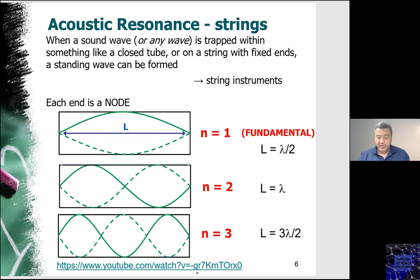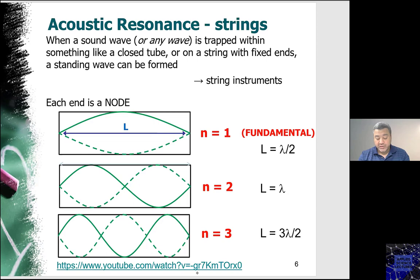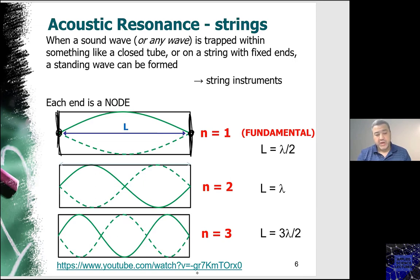Now let's move to the resonances that we talked about at the beginning of the lecture. These are the types of instruments or resonators we will be dealing with. If it's a string instrument, for example, it will be made of a closed-closed ends resonator. Once you have a closed end, you definitely have a node on that closed end. This is very important: once you have a closed end, the wave will have a node at that end.